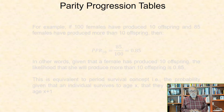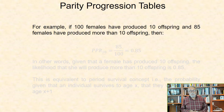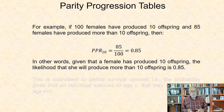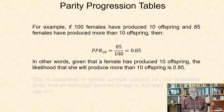For example, if 100 females have produced 10 offspring and 85 females have produced more than 10 offspring, then PPR 10 equals 85 divided by 100 equals 0.85. In other words, given that a female has produced 10 offspring, the likelihood that she will produce more than 10 offspring is 0.85.